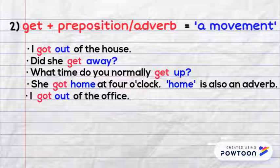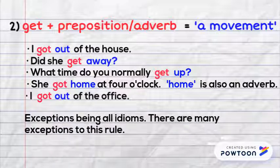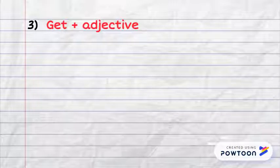Exceptions being all idioms - there are many exceptions to this rule. Three: Get plus adjective equals become.